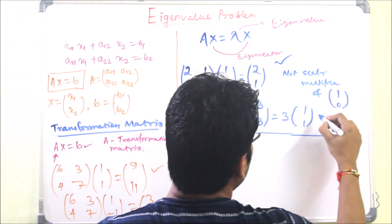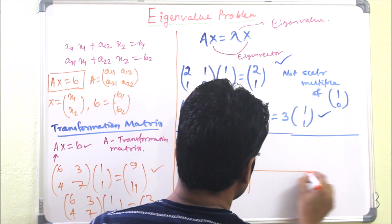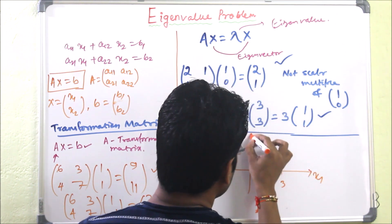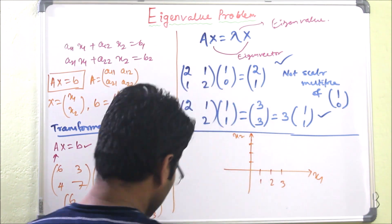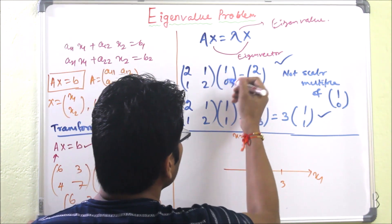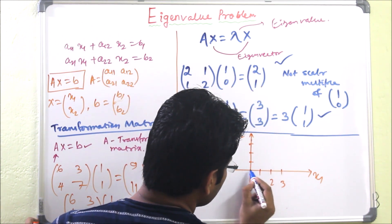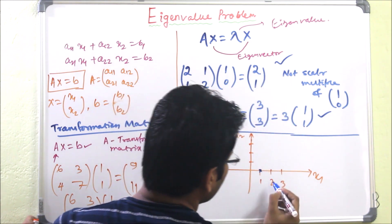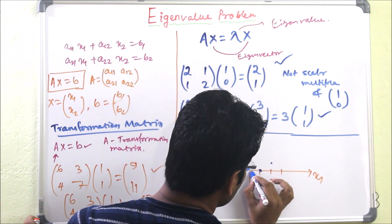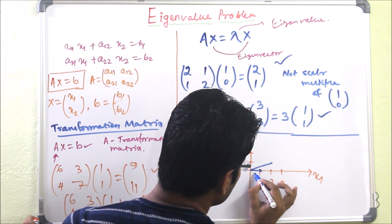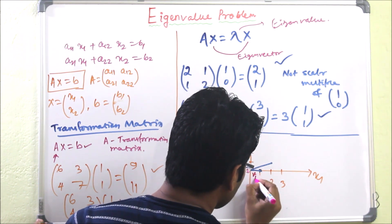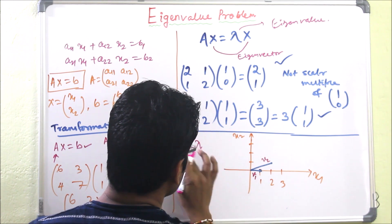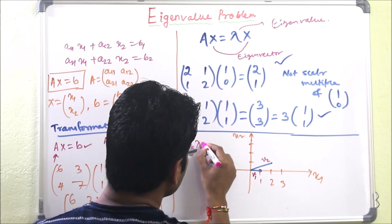Let us draw two axes x1 and x2 with scale 1, 2, 3. If we take the vector [1, 0], it is the point (1, 0). After applying the transformation [2, 1; 1, 2], we get the vector [2, 1]. Calling the initial vector v1 and the transformed vector v2, we see that v2 is not equal to λ times v1 — so [1, 0] is not an eigenvector.